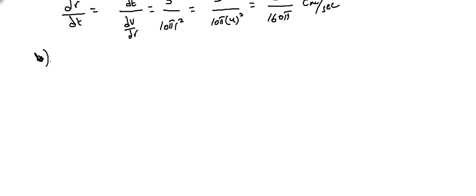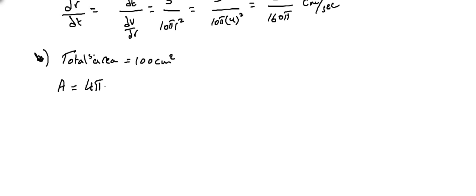Part B is independent. It states that the total surface area of metal to be used is 100 cm². The total surface area of the shape is the surface area of the sphere, which is 4π r², plus the lateral surface area of the cylinder, which is 2π r h. This equals 100 cm².